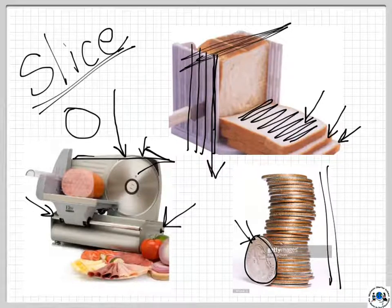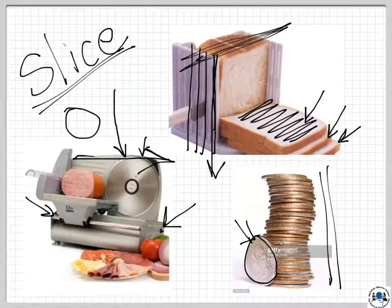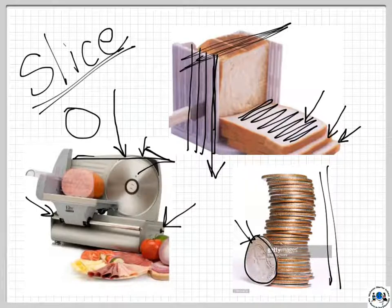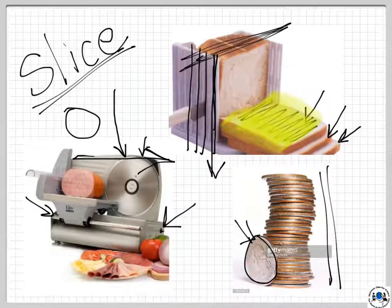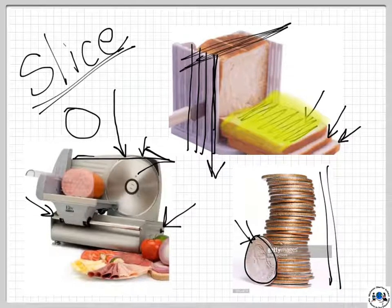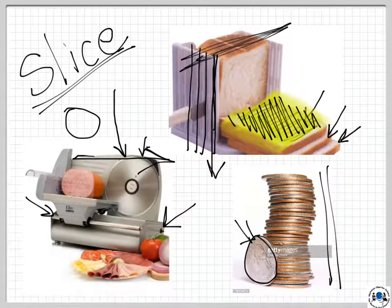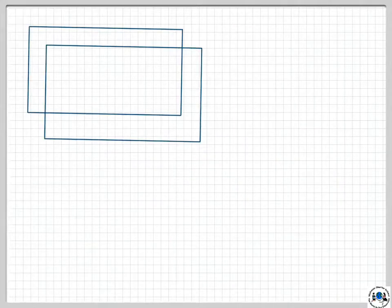Before moving on, let's address an important question: what exactly is the 'slice part'? In geometry, is the slice the physical piece cut off — like a piece of bread — or is it the resulting surface from the cut? This distinction matters, and we'll clarify it as we discuss the geometric concept of a plane.